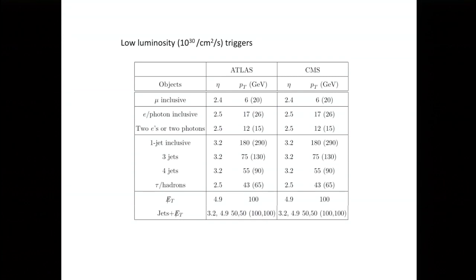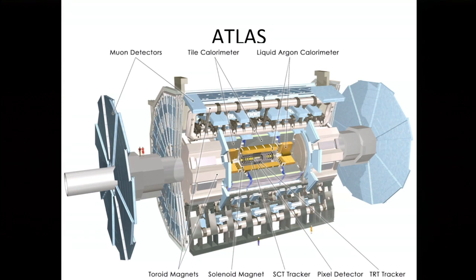To summarize: the number to keep an eye on is 10 to the 34 — the design luminosity. Luminosity grows with time, pile-up increases with luminosity, trigger thresholds have to increase too, but you get more collisions. There are trade-offs with higher luminosity. Now let me talk a little about the Atlas and CMS detectors.